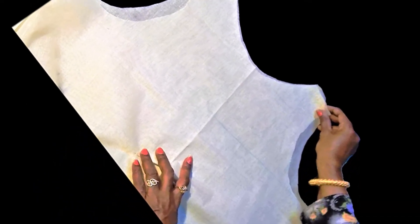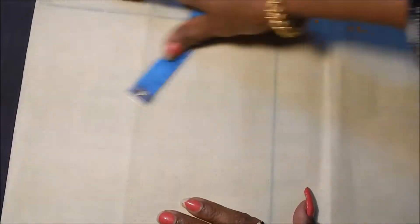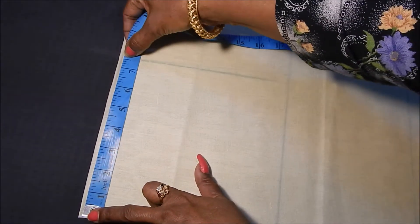Let's get started by drafting on a double folded lining material which I will be using for churita top. Measure shoulder and take half of it. Here my shoulder is 15 inches, half of 15 is seven and a half inches, so mark it seven and a half inches.